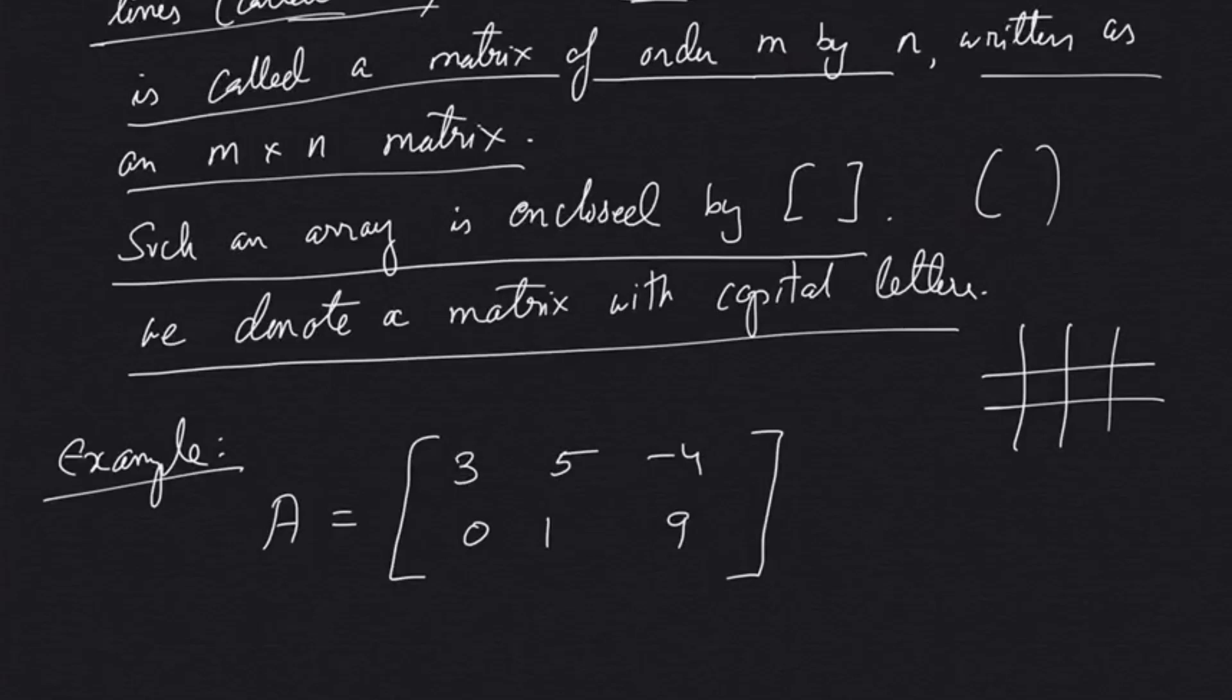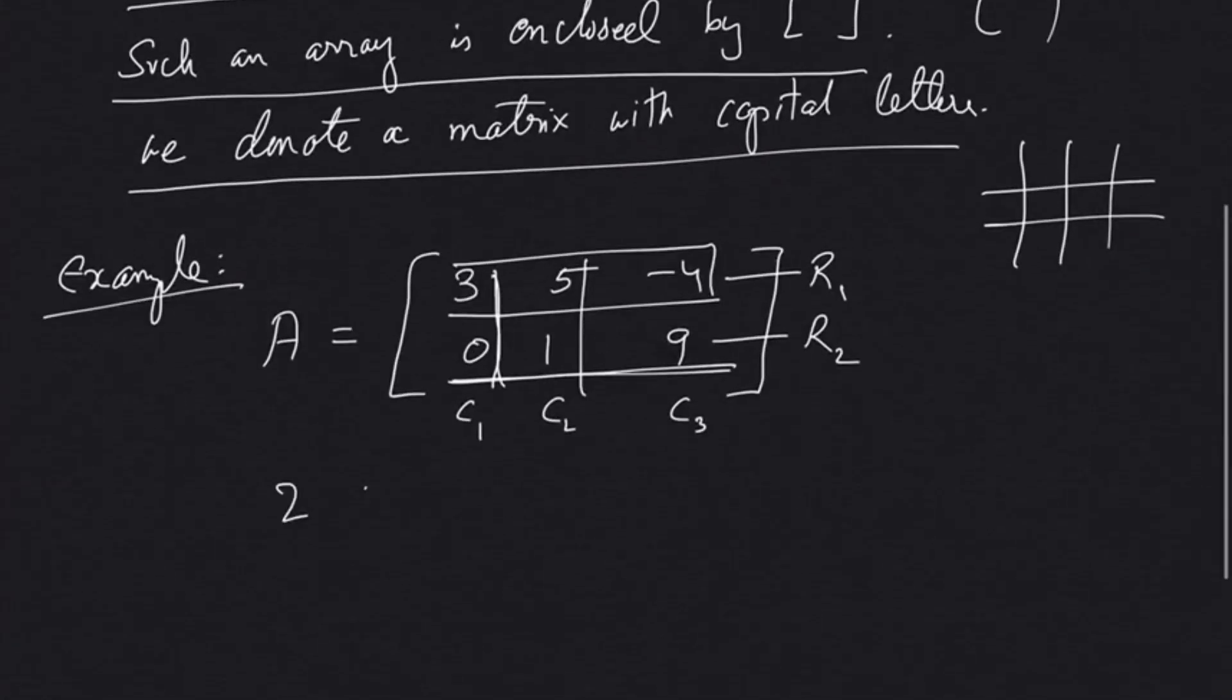This is a rectangular arrangement of horizontal and vertical lines. These horizontal lines are called rows and vertical lines are called columns. This first row is row 1, this is row 2. The first column is column 1, second column is column 2, third column is column 3.